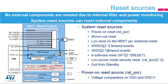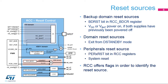The reset source flag can be found in the RCC control and status register. The power-on reset is generated when the VDD or V-Core voltages are lower than a certain voltage threshold. The backup domain reset occurs when the BDRST bit in the RCC-BDC-R register is set to 1 by the application, as shown in the figure, when the VDD and VBAT are powered on, if both supplies have previously been powered off.